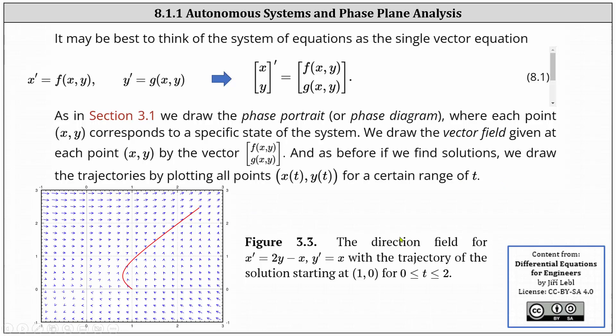Below, we have the direction field for x' = 2y - x and y' = x. The trajectory of the solution starting at the point (1,0) for t over the closed interval from 0 to 2 is graphed in red.